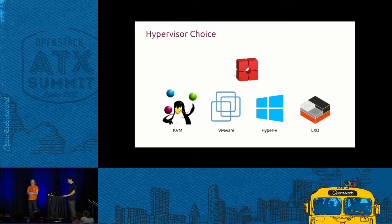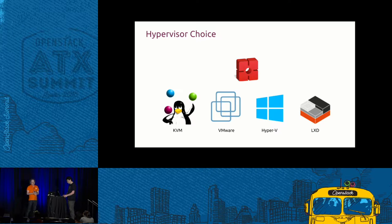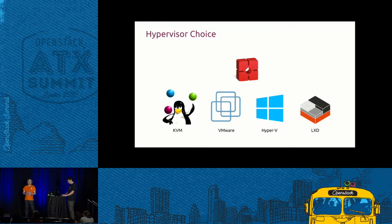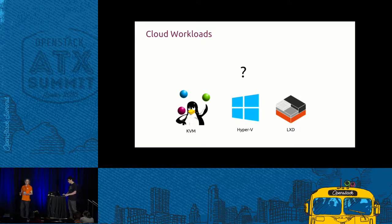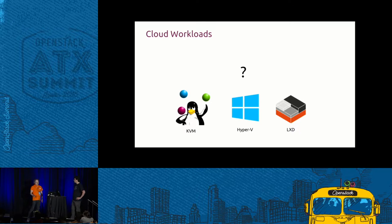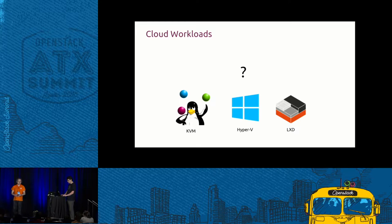So, hypervisor choice. Increasingly, OpenStack and KVM — which is the most well-supported option — it's not the only option. There are numerous other choices: VMware, Hyper-V from the CloudBase guys, and the new system container driver, LXD from Canonical. Depending on what workloads you're putting on your cloud, you may drive what choice of hypervisor you want. You don't really want to go for a binary option — some things are best on KVM, some on Hyper-V, and some in containers. So don't take a single choice.